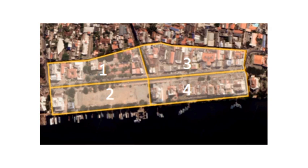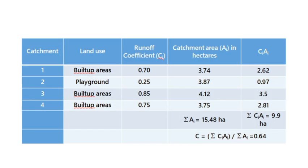I, Namita Binu, handled the calculation of subcatchment areas as well as the runoff coefficient for those subcatchments. As you can see in the image, the entire catchment was divided into four parts according to its topographic features. The center line in the image represents the center of the road. Using the software Google Earth Pro, the different areas of the subcatchments were calculated, and using IRC SP50 2013, the runoff coefficients were calculated.